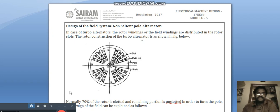Hi to all, in this video we are going to see about design of the field system of non-salient pole alternator. In case of turbo alternators, the rotor windings or the field windings are distributed in the rotor slots.